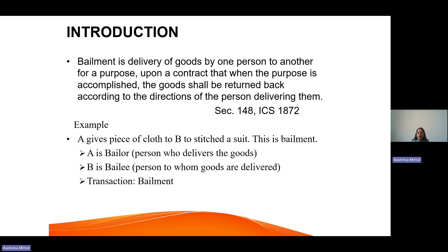A delivers some goods to B for a purpose, and that purpose is stitching. When the suit will be stitched, it will be returned to A. This entire transaction is known as bailment. The one who delivers the goods, or who is actually the owner of the goods, is known as the bailor, and the one to whom the goods are delivered for some purpose is known as the bailee.